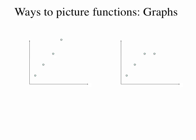One last way to picture functions is with graphs. Each input-output pair from a table can be turned into an x-y coordinate that tells you where a point is. In the graph shown, each point has coordinates found in the table: the first point is (1, 2), then (3, 6), then (4, 8), then (5, 11).